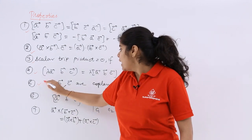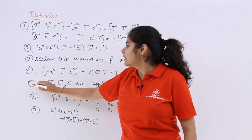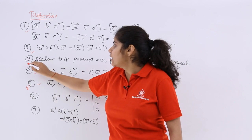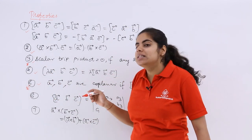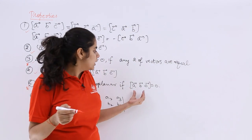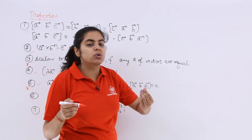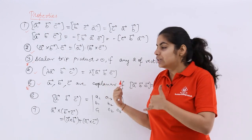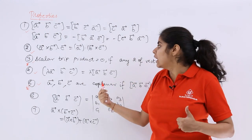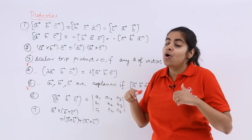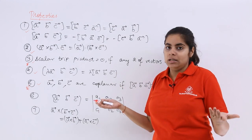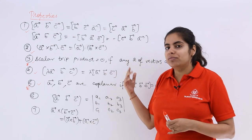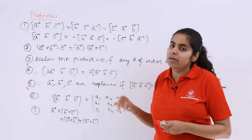The next property says A, B, C are coplanar. This is again important. These two properties are very important: A, B, C are coplanar if the scalar triple product is zero. So if there are three vectors given to you which are not collinear, their scalar triple product is zero means they are coplanar, or two of them are equal. So properties 3 and 5 are important.